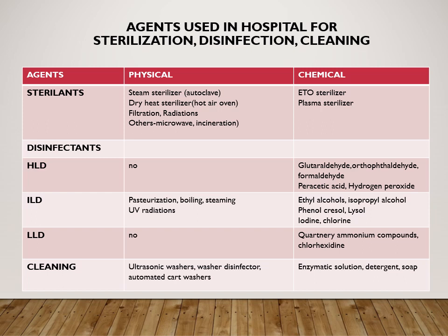Agents used in hospitals are divided into sterilants, disinfectants, and cleaning agents. Sterilants are agents that achieve the level of complete sterilization. Physical sterilants include autoclave (moist/steam sterilizer), hot air oven (dry heat sterilizer), filtration, radiation, microwave, and incineration. Chemical sterilants include the ETO sterilizer and plasma sterilizer.